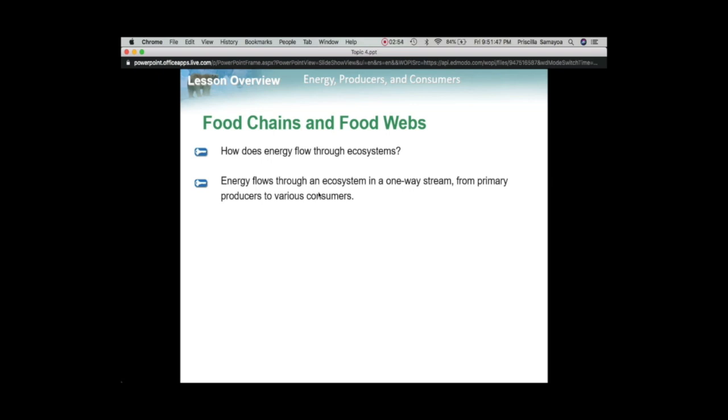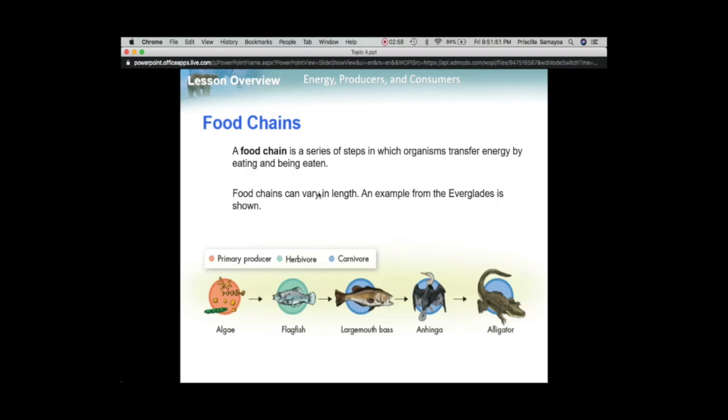So food chains and food webs. You guys should be very familiar with these, especially if you're in biology right now. In a food chain, energy is going to flow one way. The point of these arrows, just so that you understand and don't make this mistake on a test later on - the arrow isn't just here to tell you that this fish eats that algae.